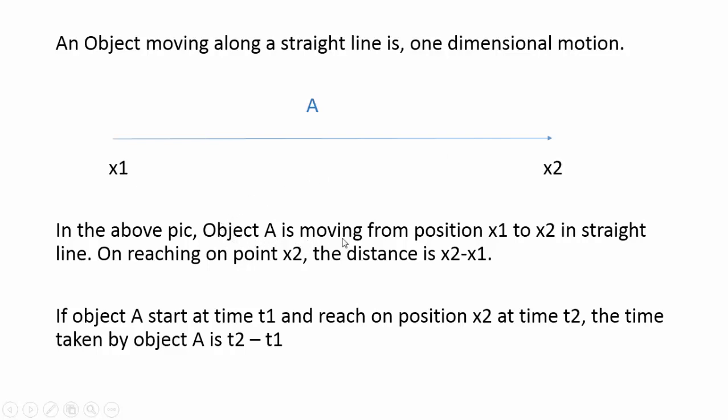Object A is moving from position x1 to x2 in a straight line. On reaching point x2, the distance covered by object A is x2 minus x1.